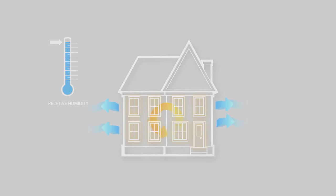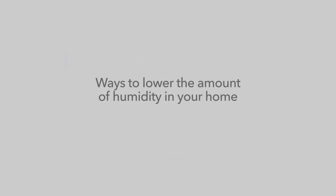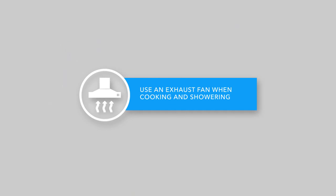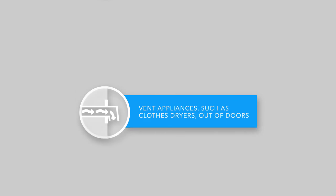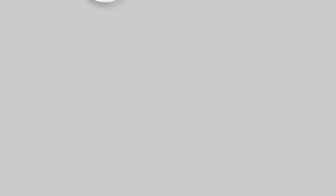To reduce condensation formation, you can lower the humidity in your home in the following ways: use an exhaust fan when cooking and showering, turn on indoor ceiling fans, do not use humidifiers, and vent appliances such as clothes dryers out of doors.